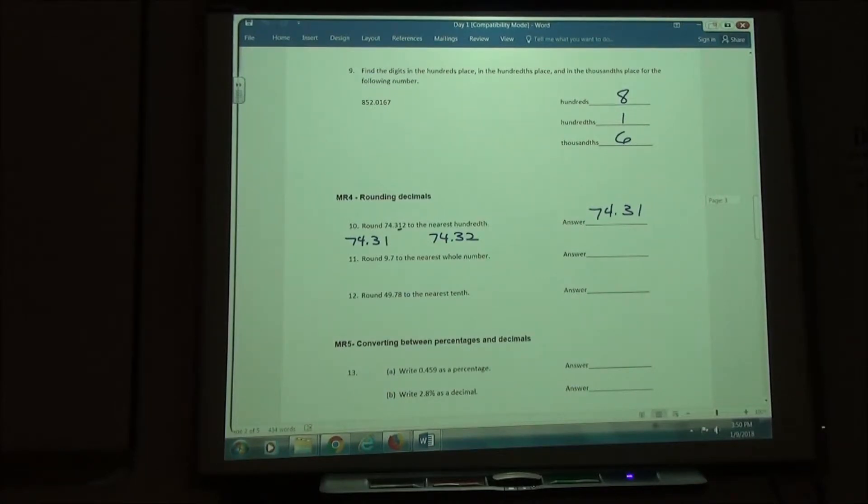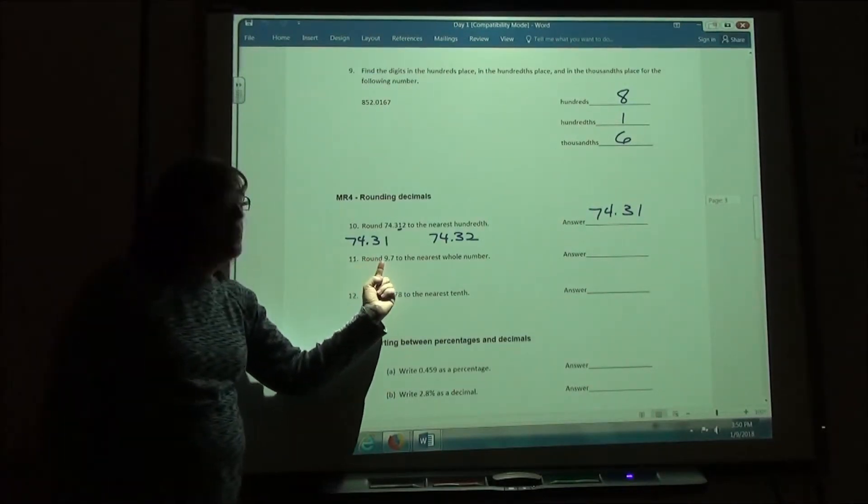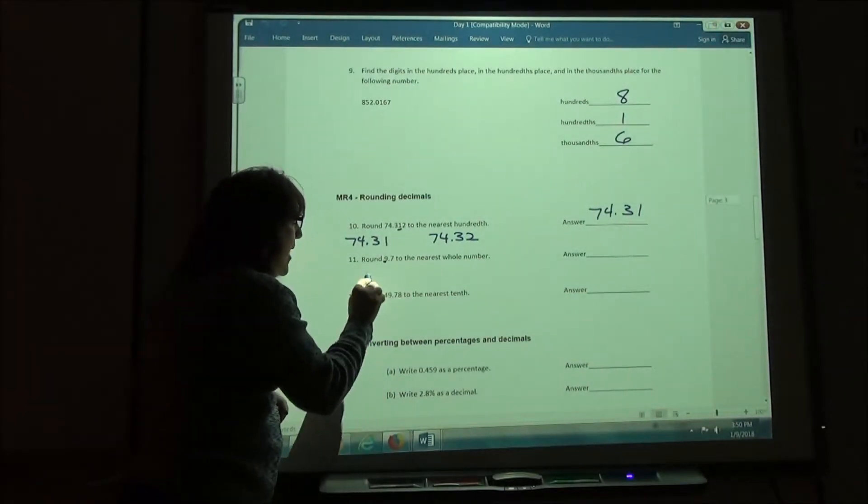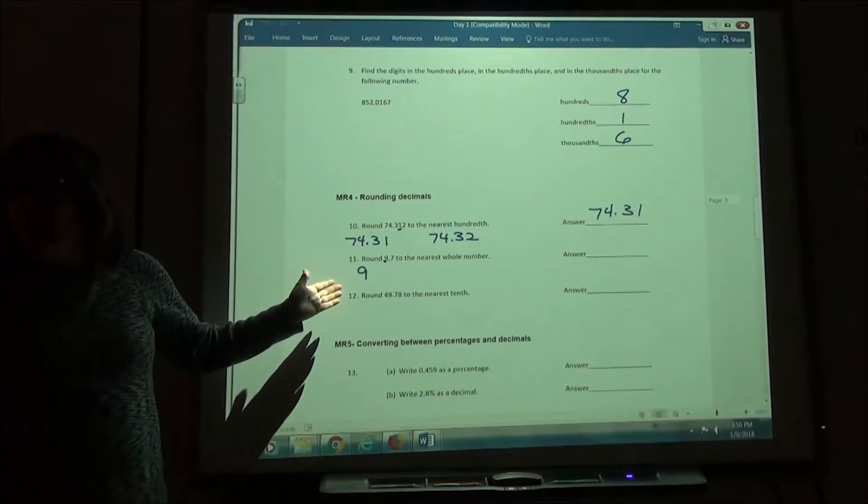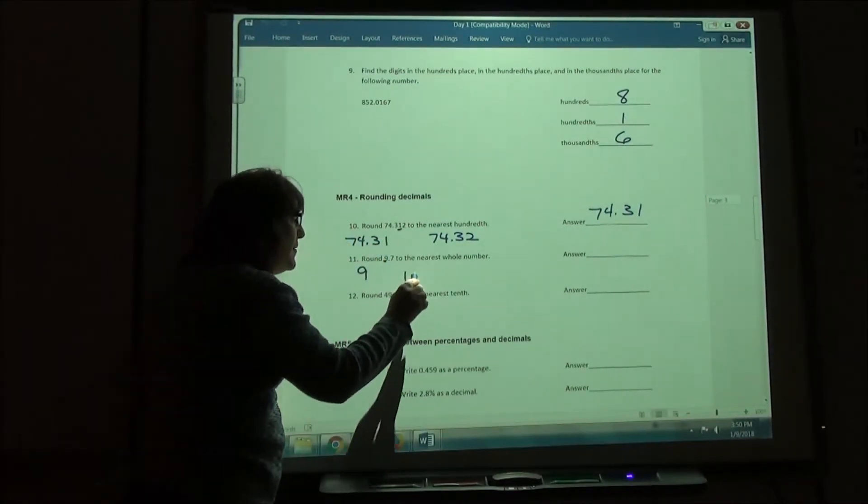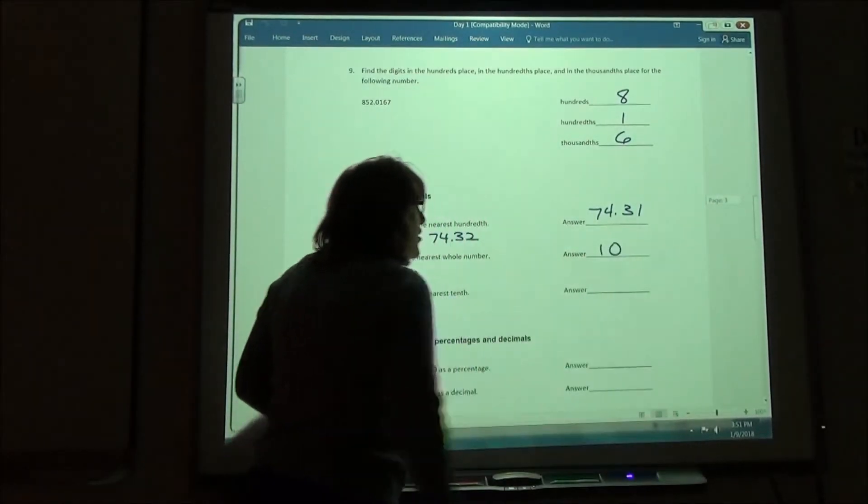If I'm rounding to the nearest whole number, that means I'm rounding to the 1 spot. In this case, there's a 9 there. So again, I could leave it a 9, but since there's a 7 behind it, I actually am going to round it up by 1. So my answer is going to be 10.